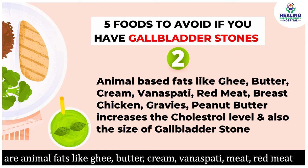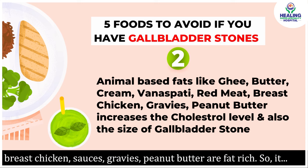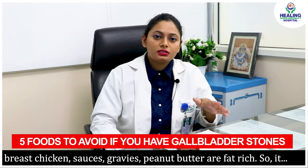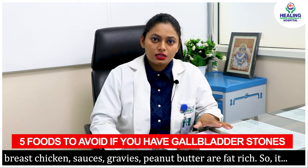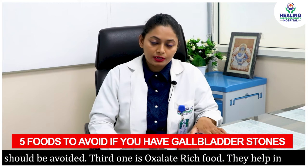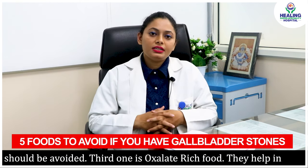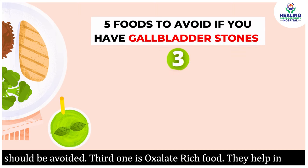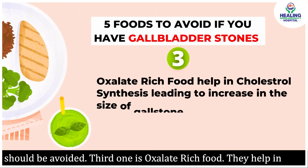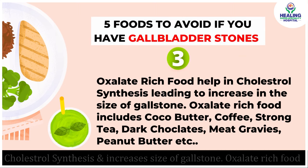Other saturated fat sources include vanaspati, meat, red meat, chicken, sauces, gravies, and peanut butter — all of these are rich in fats. You should avoid all of these. The third one is oxalate-rich food.